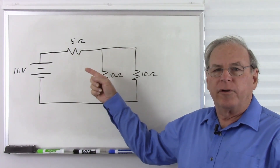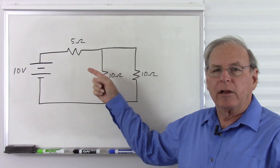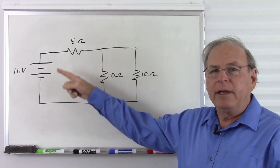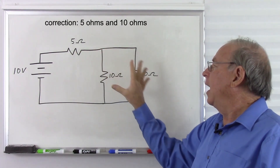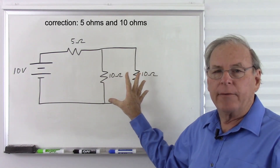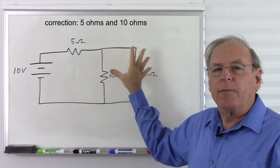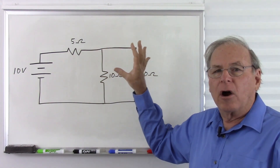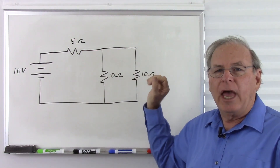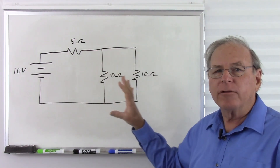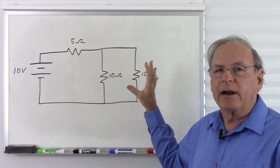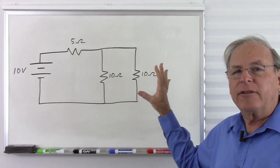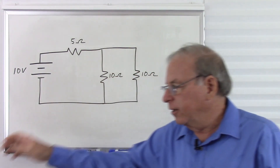Here is a circuit with both series and parallel elements. We have one battery, a 5K resistor, and then two 10K resistors. What we need to do is identify which parts of the circuit are in series and which parts are in parallel, and how those different parts interact with each other. First, let's identify which part is which.